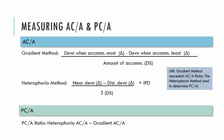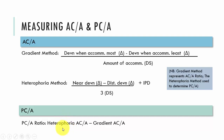We then calculate the heterophoria method: when the patient accommodates most (at near) minus when they accommodate least (at far), divided by three diopters — because we assume the test was done at infinity (zero accommodation) versus at a third of a metre (three diopters), giving a change of three diopters — and we add the patient's IPD in centimetres. To work out the PCR ratio, we subtract the gradient ACA from the heterophoria ACA. The reason is that the heterophoria ACA is contaminated by the PCR whilst the gradient is not, so by subtracting one from the other we gain knowledge of the PCR ratio.